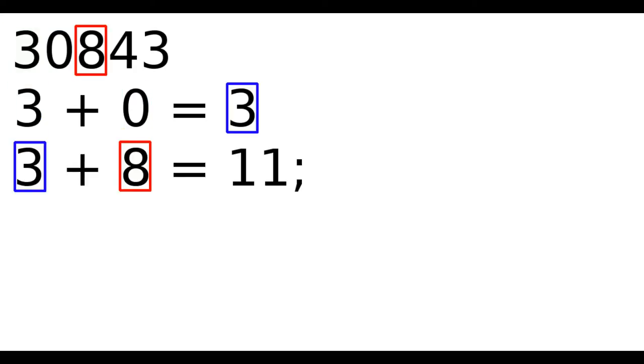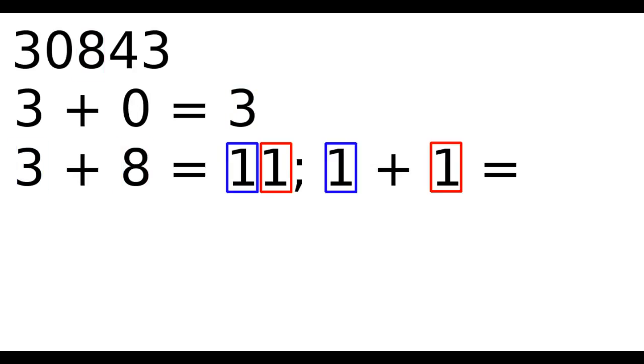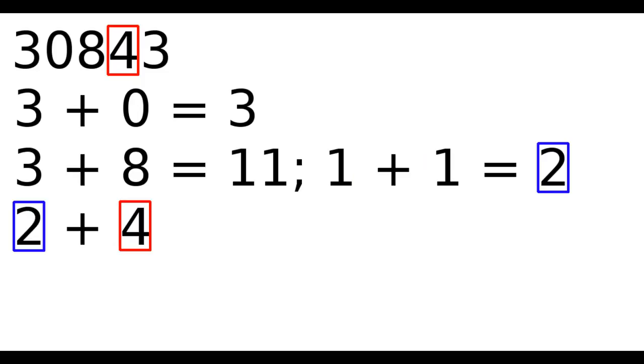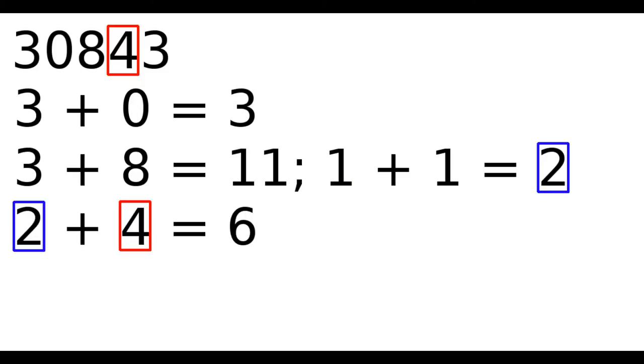But because we can't have a number greater than a single digit, we do one plus one, which equals two. Two plus four equals six. And six plus three equals nine. And we find that it's nine. This verifies the answer is a multiple of nine.